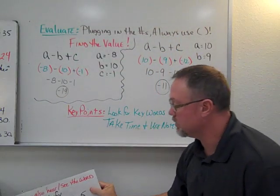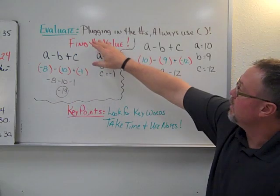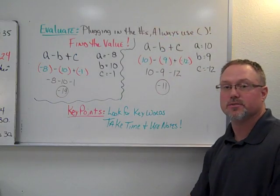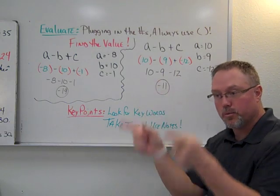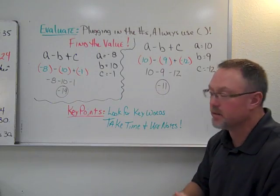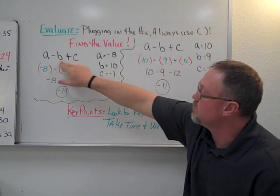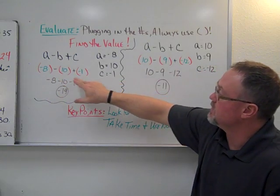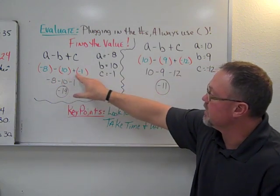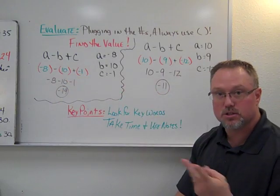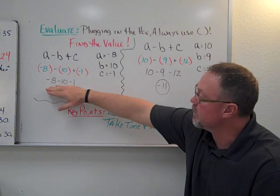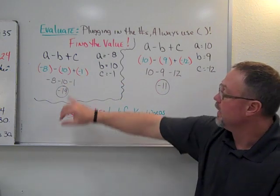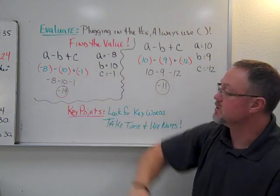Our last topic is evaluating expressions — this is simply plugging in numbers, and you should always use parentheses because it affects how negatives work. For example, given a minus b plus c, with a equals negative 8, b equals positive 10, and c equals negative 1 — simplify the signs. An odd number of negatives gives a negative, so we get negative 8, negative 10, negative 1, which gives a final answer of negative 19.